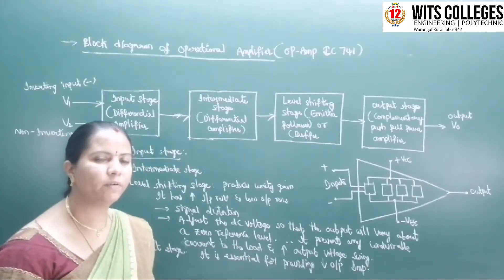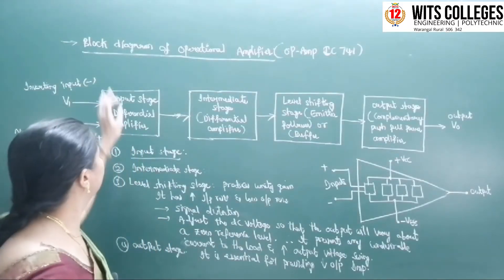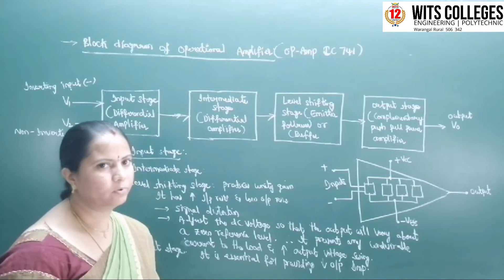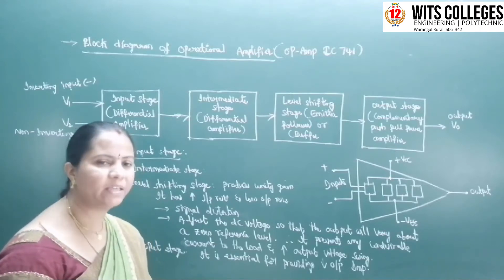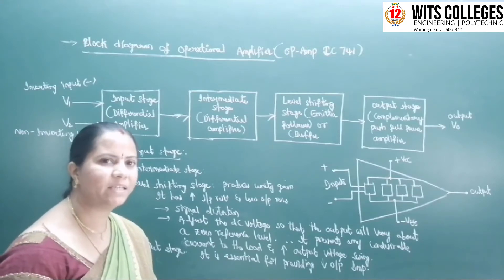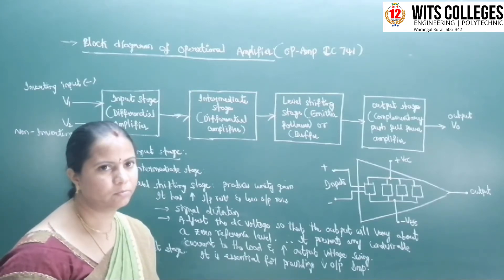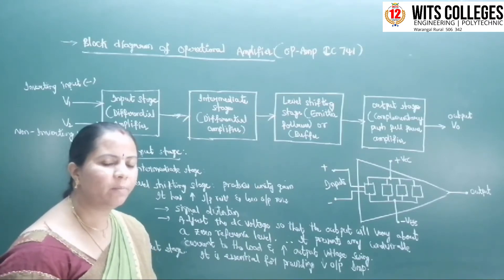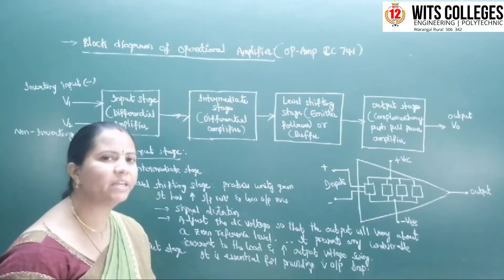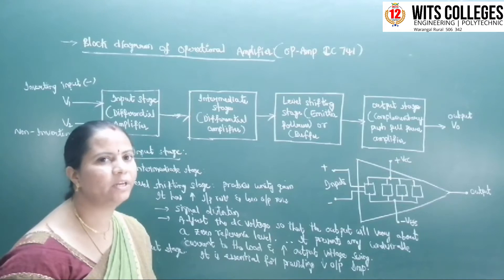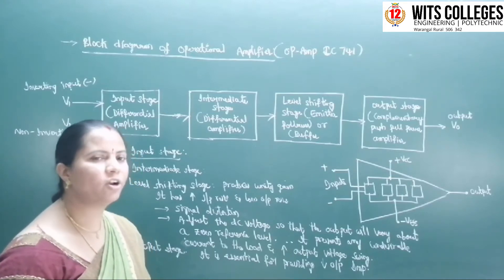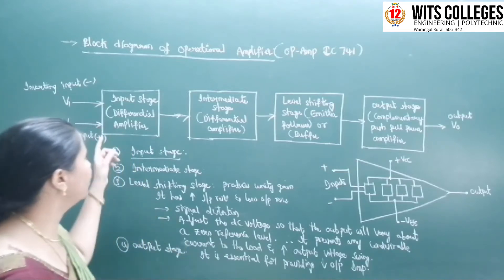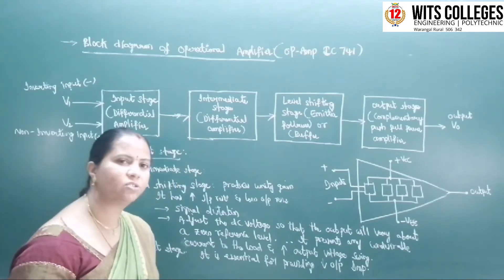Welcome to Wits Connect. Today we are going to discuss the block diagram of the operational amplifier, or simply op-amp. The IC number for the op-amp is IC 741. IC stands for integrated circuit, which is a device where active and passive components are fabricated on a single chip. The IC number for the op-amp is 741.